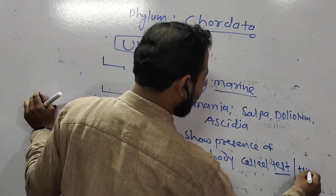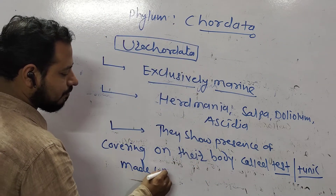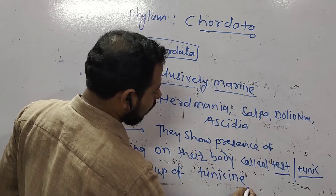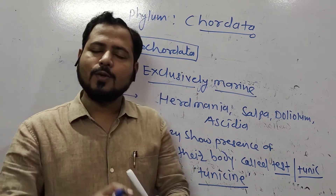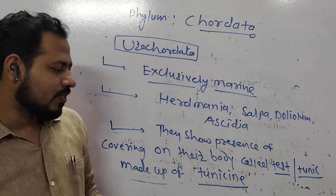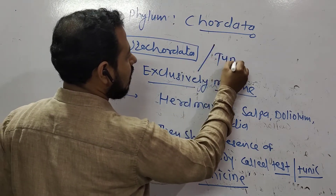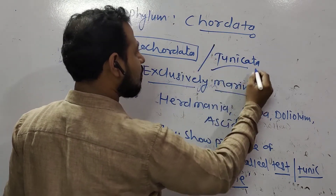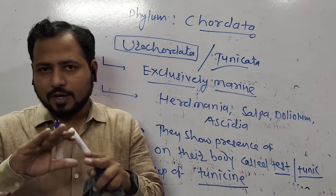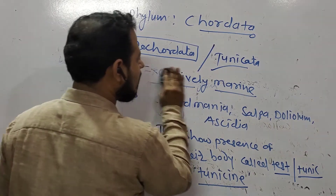Their body is totally covered by a test, also called tunic, made up of tunicine. Tunicine is a very important chemical that forms a protective coat on their body. That is how these animals are called tunicates. The presence of tunic over their body is the striking feature of these animals.